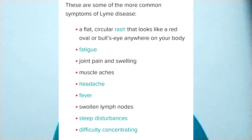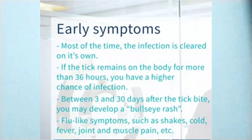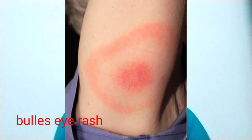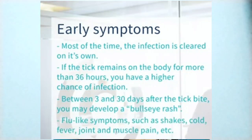We can divide these symptoms into early and late symptoms. For early symptoms, if the tick remains on the body for more than 36 hours, you have a chance of infection. In the first one or two days it may not cause infection, but after 36 hours it may. Between three and 30 days after the tick bite, the bullseye rash may develop — that is the special name for that rash. Flu-like symptoms such as fever, cold, joint pain, muscle pain, and shakes may also appear. Most of the time the infection is cleared on its own.